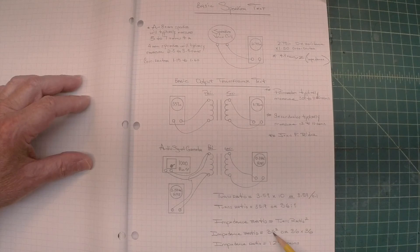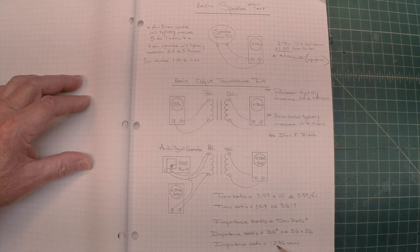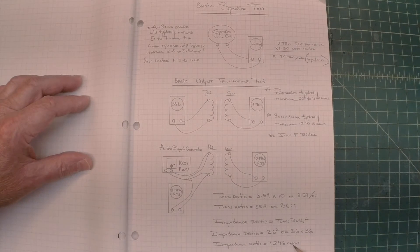Impedance ratio: 36 squared, or 36 times 36 gives me an impedance ratio of 1296 ohms.